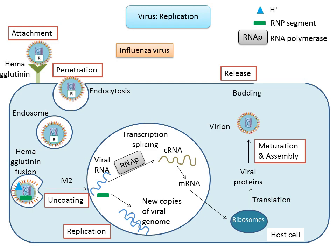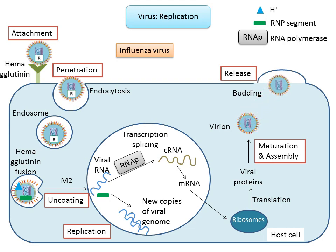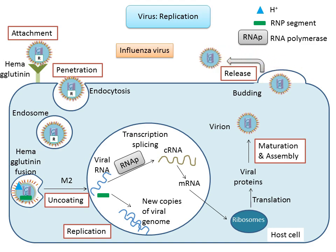Viral proteins are processed and delivered to the exterior of the host cell by the rough endoplasmic reticulum and Golgi apparatus. The RNPs assemble there and the virus buds from the host cell surface, becoming enclosed in the phospholipid envelope containing the viral protein spikes.